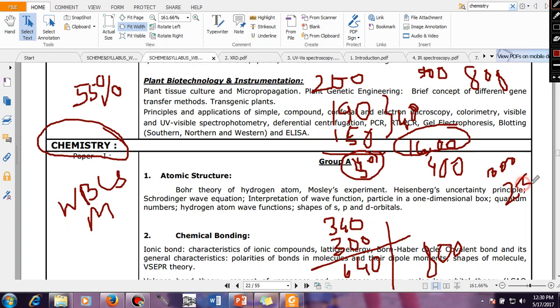Then it is coming 640 plus 250, that means around 900, that is 898 to be exact. But around 900 you can easily score. So if you plan this way, then you can easily crack WBCS Main examination.